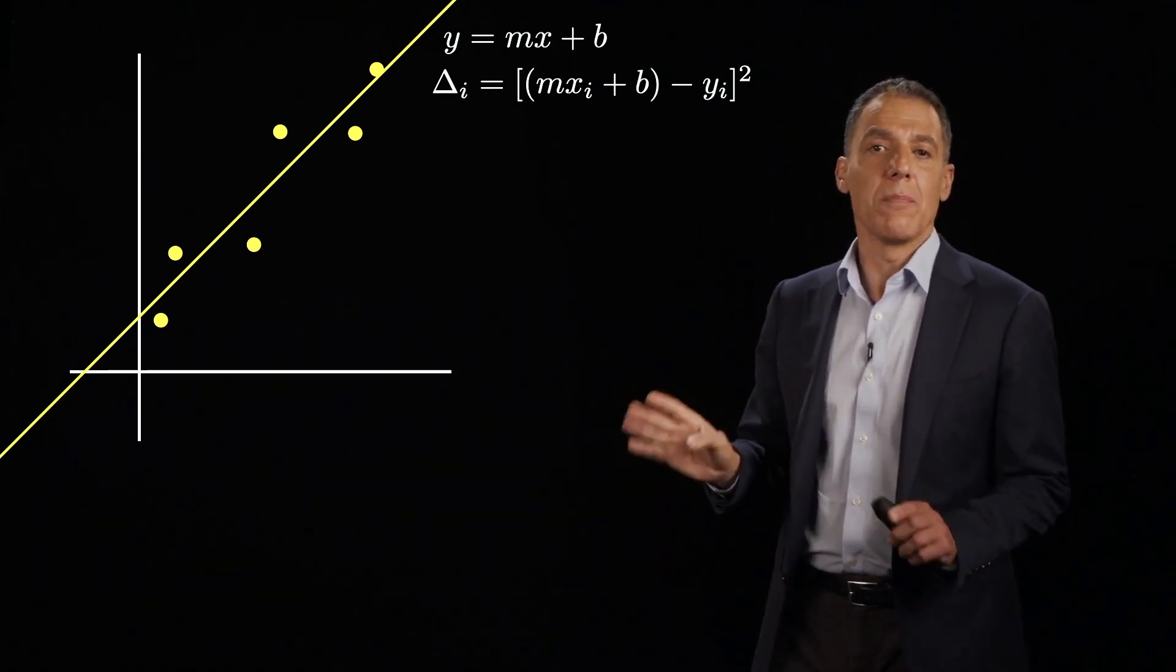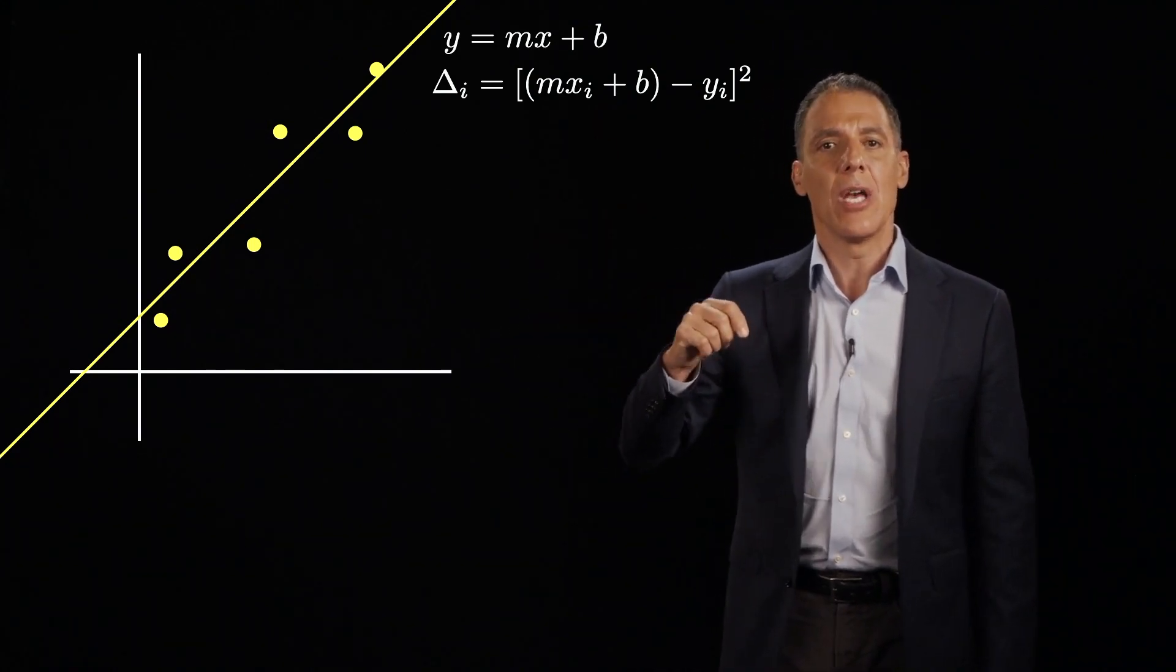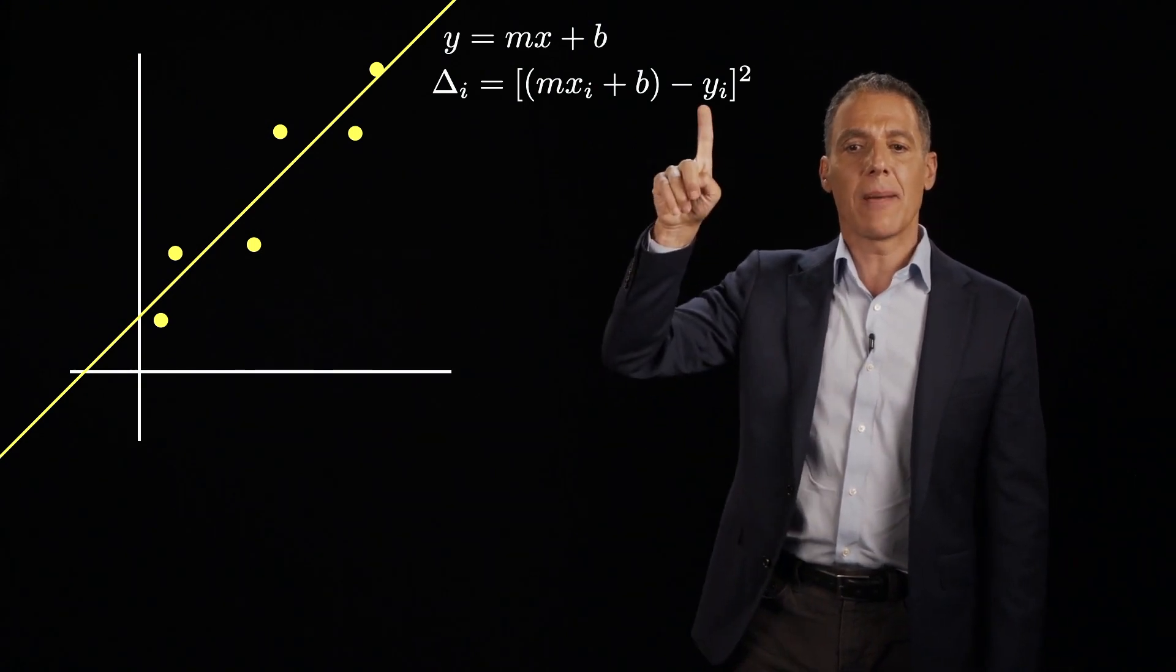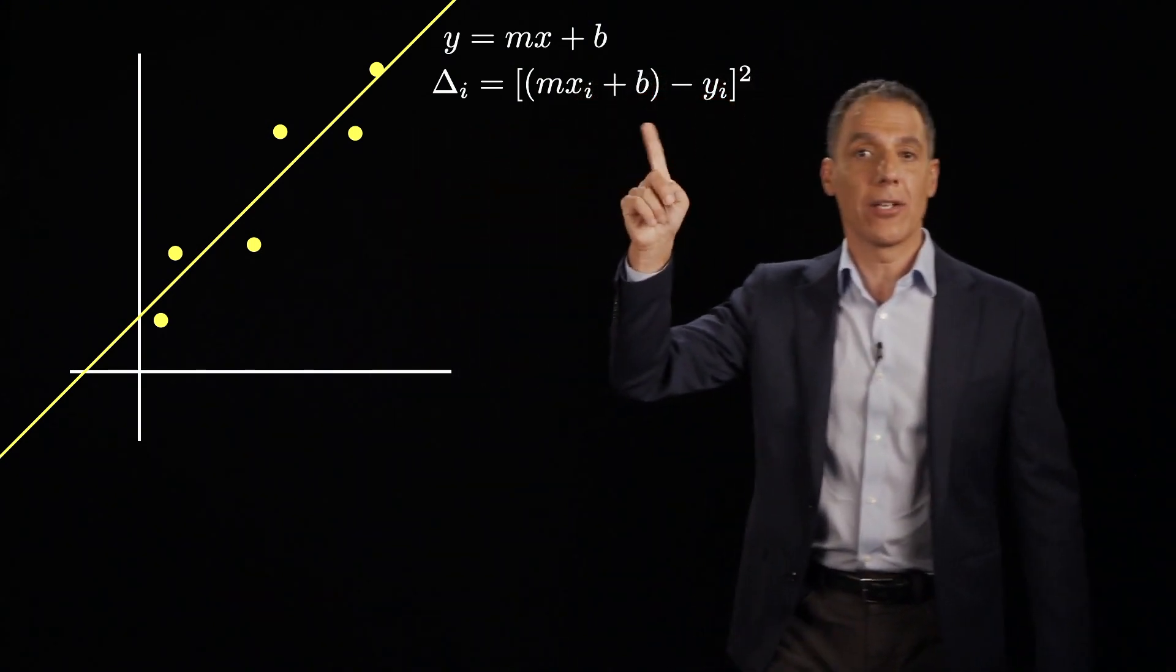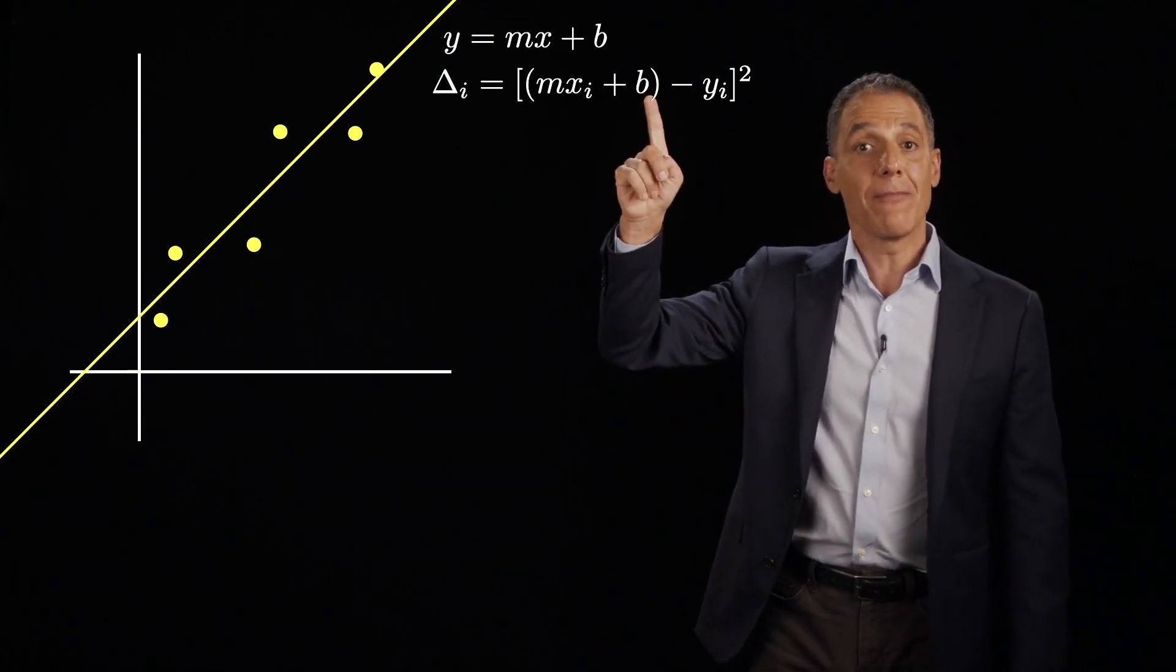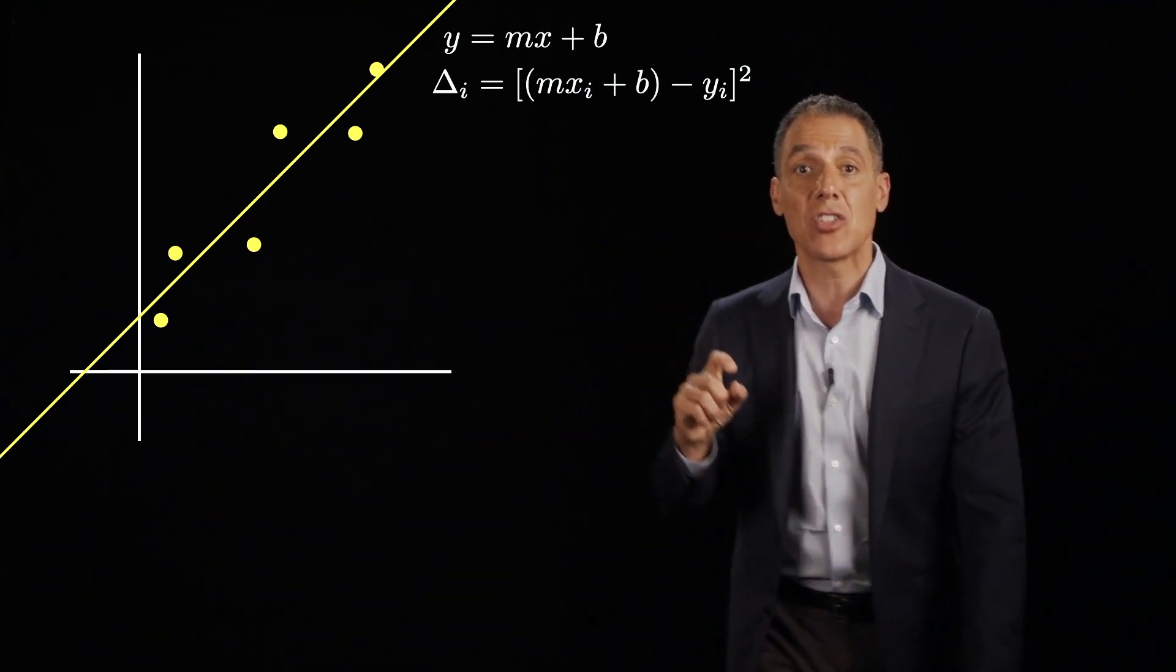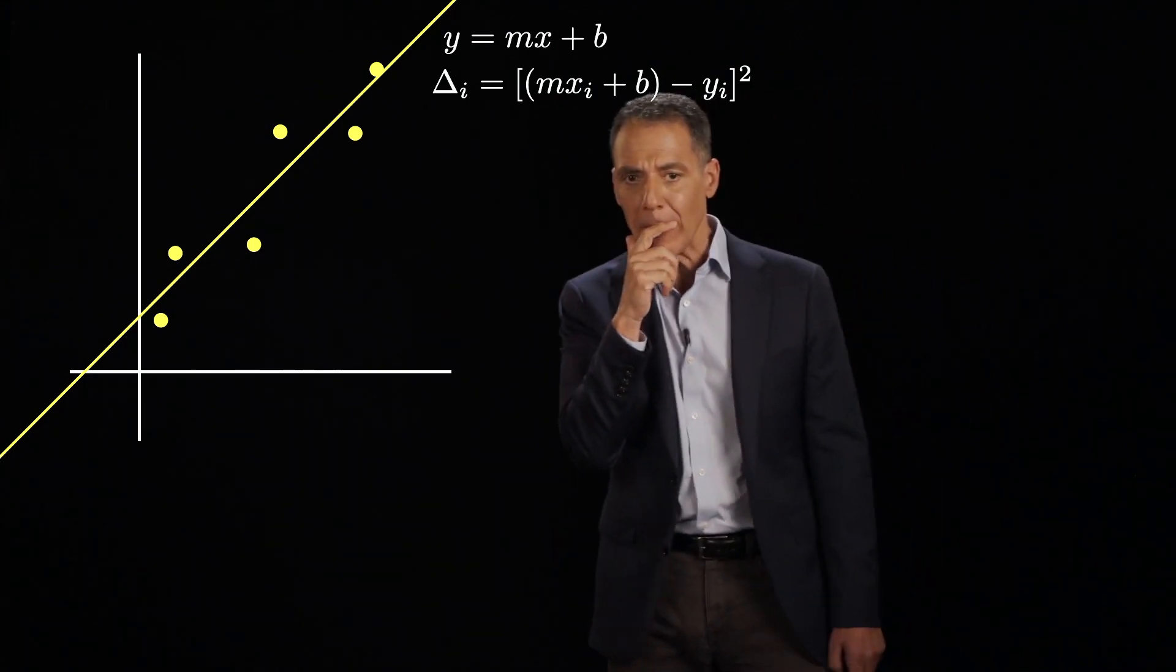And absolute value creates a mess for the optimization. There would have been nothing wrong with me saying I would like to minimize the absolute value of this distance, but it would have made my optimization that I'm about to do more difficult. So instead, I'm going to square it. And I'm going to square it because when I have quadratic error functions, they are easier to optimize, even though I've made a statement here that I'm going to penalize the error as the square of the distance, not just the absolute value of the distance.